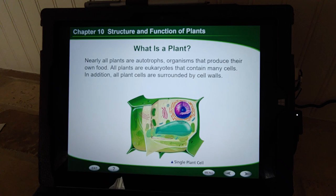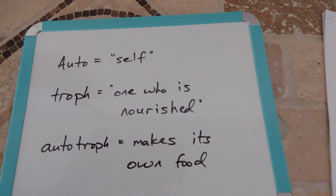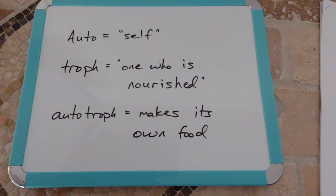Nearly all plants are autotrophs. The word autotroph is actually two Greek words put together. The first one, 'auto,' means self — if you think of an autobiography, it's a story you write about yourself. And 'troph' is roughly translated to 'one who is nourished.' So together, autotroph means something that makes its own food.